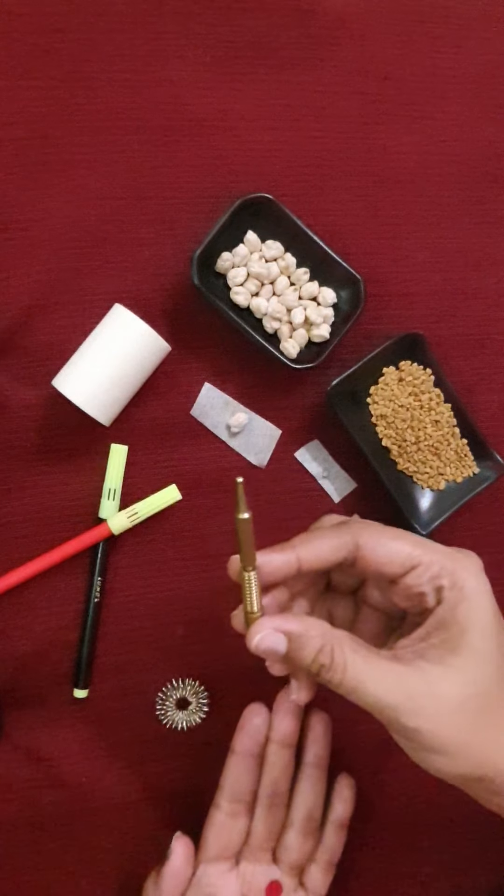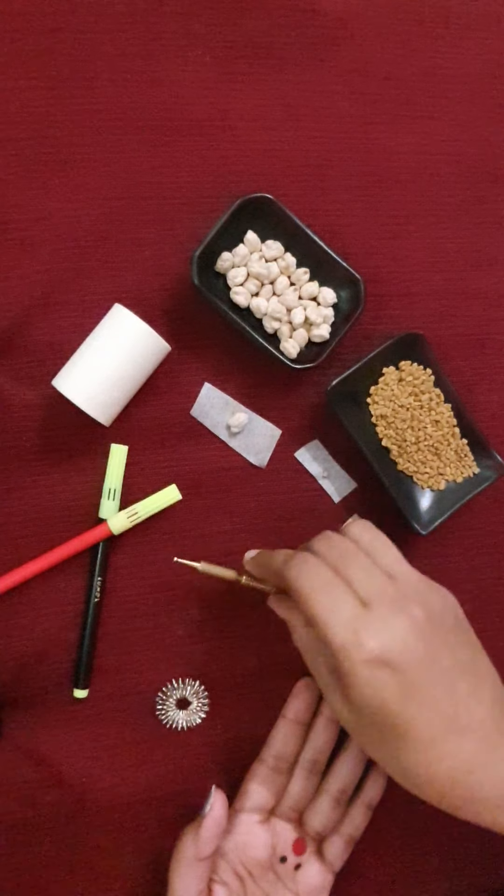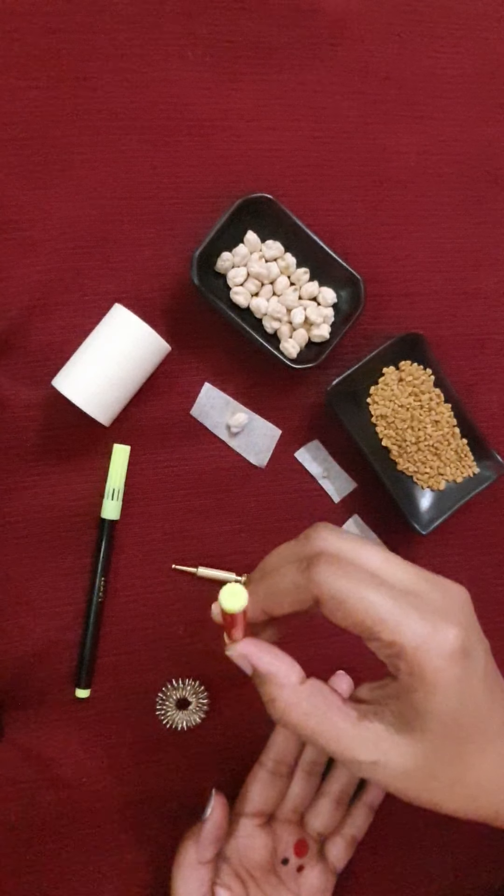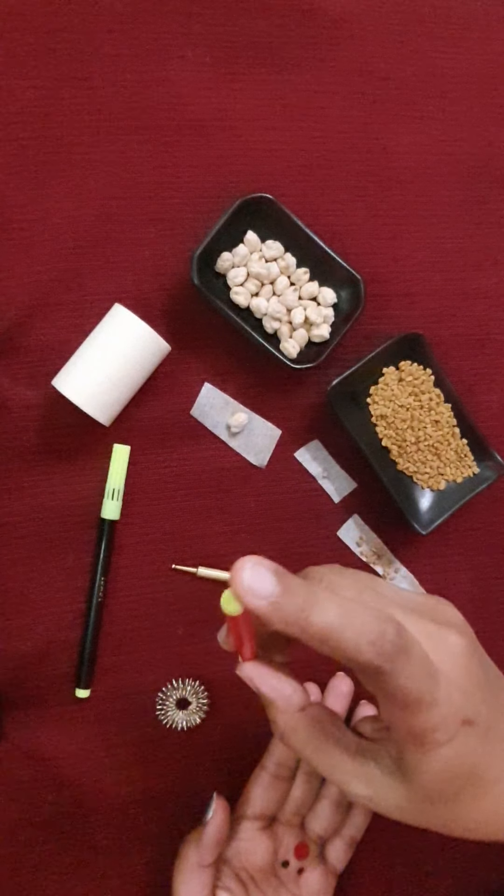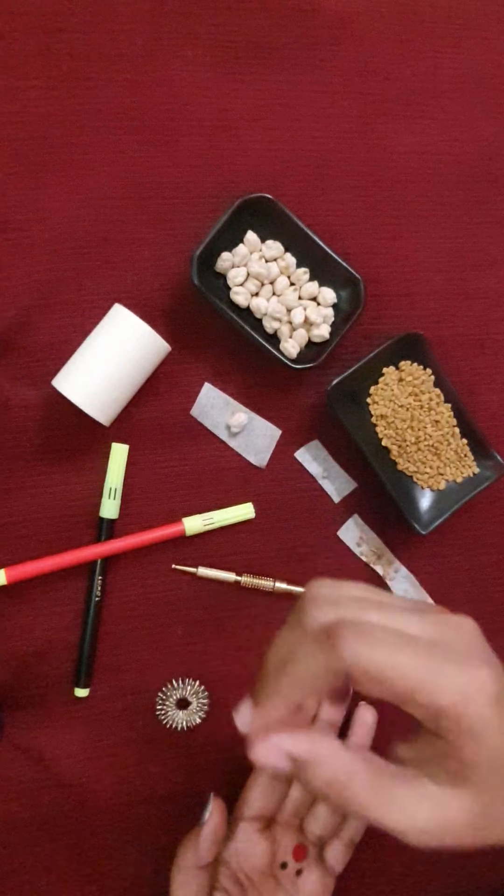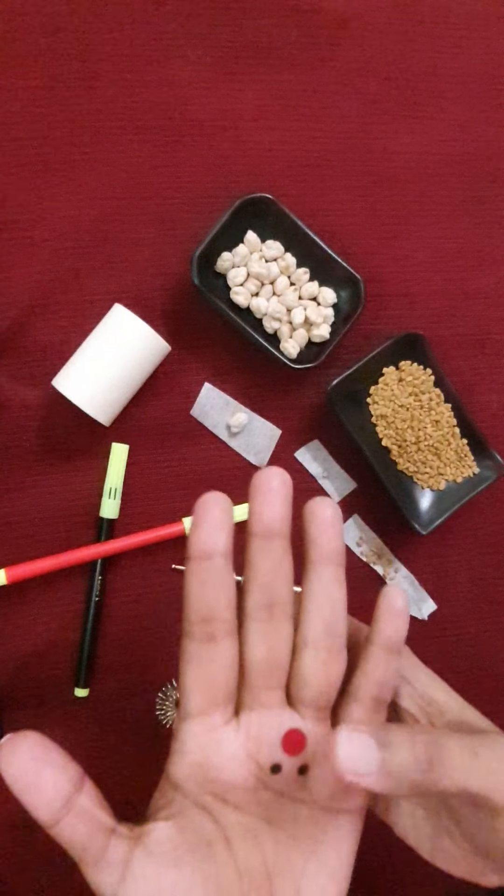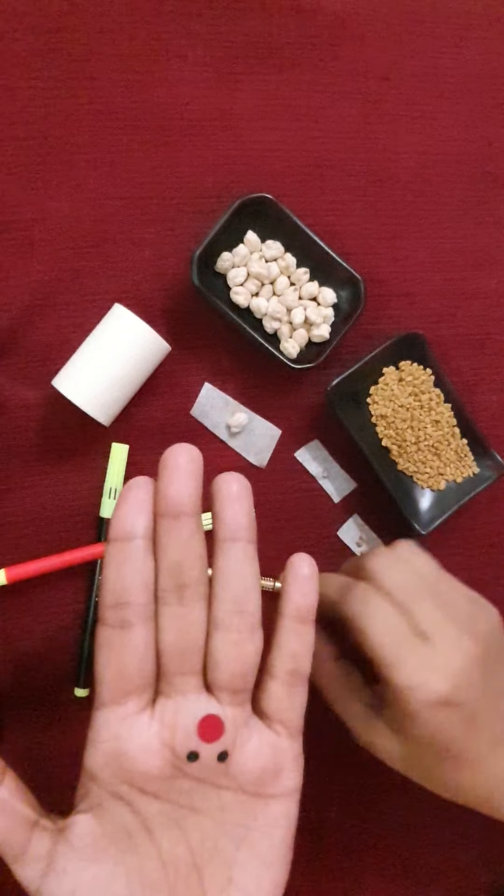Now, I have a probe here which I will be using. If you do not have a probe, no problem. You can make use of any blunt instrument like the backside of a pen or a toothpick. And if nothing else, if you are outside, you don't have access to all this, the thumb of your other hand is good enough. You can just use it to press the points.